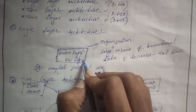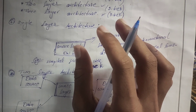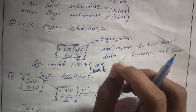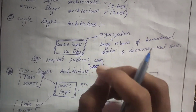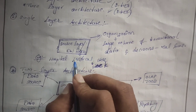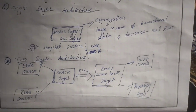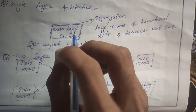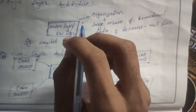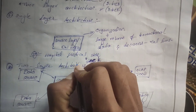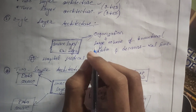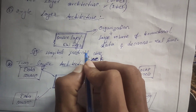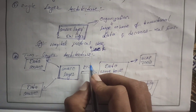Single layer architecture consists of only one layer, that is the source layer or data warehouse layer. Here a particular organization, for example a hospital or medical store, stores a large amount of transactional data. This data should be real-time; for example, in a medical store there are a lot of stocks, and these stocks should be updated at all times with a large number of transactions.